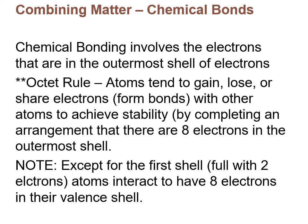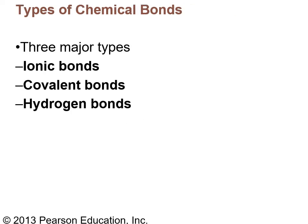Now, combining matter — making chemical bonds. Chemical bonding involves the electrons in the outermost shell. There's two electrons in the first shell, the second can hold eight, and it keeps going out. The octet rule says atoms tend to gain, lose, or share electrons — forming bonds with other atoms to achieve stability — meaning they need to have eight electrons in the outermost shell. The exception is the first shell, which is full with two electrons.